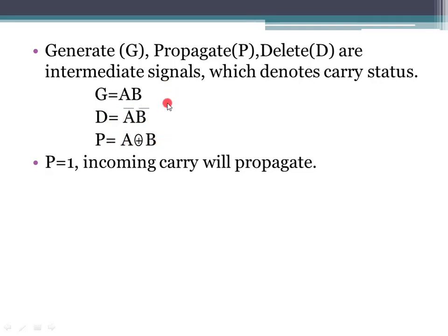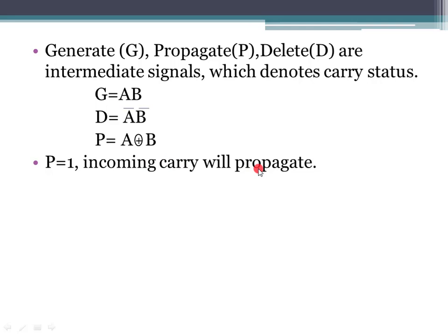For example, if inputs A and B are both 1, then g equals 1, meaning a carry is generated. If A-bar AND B-bar equals 1, that is the deletion condition — no carry is generated. If A XOR B equals 1, the carry will propagate.